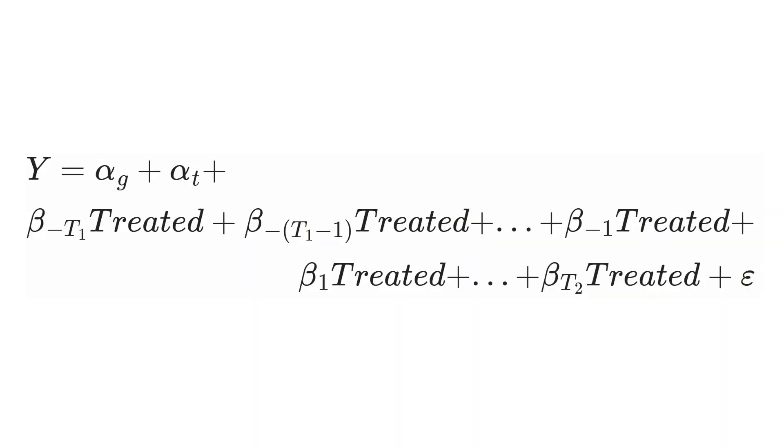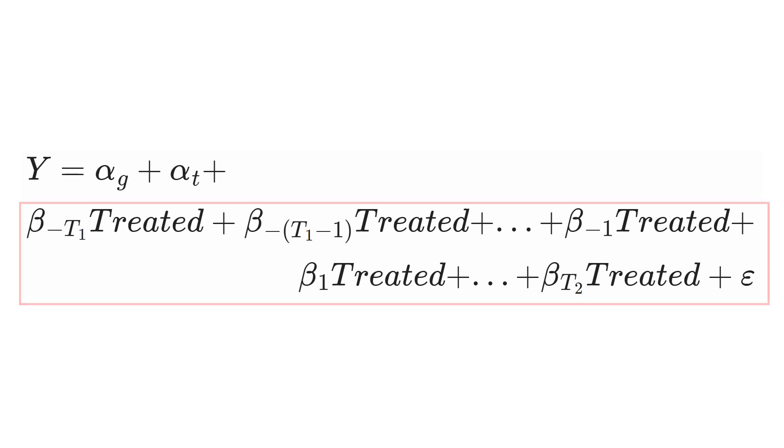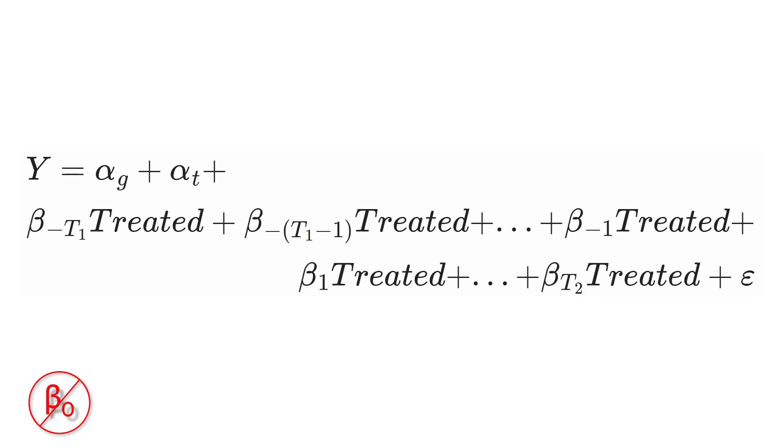We have a variable that's one if it is 2008 and you are in the treated group — even though treatment hasn't occurred yet. Same thing for 2009, 2010. We skip 2011 because we need a reference group to compare everything to. Then we continue with 2012, 2013, 2014, 2015 — a set of treated-group × year interaction terms, both before and after treatment. There is no beta-zero; it goes straight from beta negative-one to beta one, because 2011 is the omitted reference group — the baseline for the two-by-two difference-in-differences comparisons.